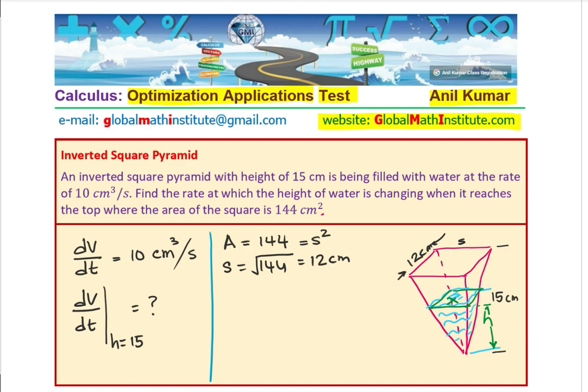To find the rate of change, we need to get the equation to work with. We are looking at the volume. The volume of a pyramid is one-third of the base area times the height. So volume equals one-third times X² times H, where the width of the square is X and the height is H.